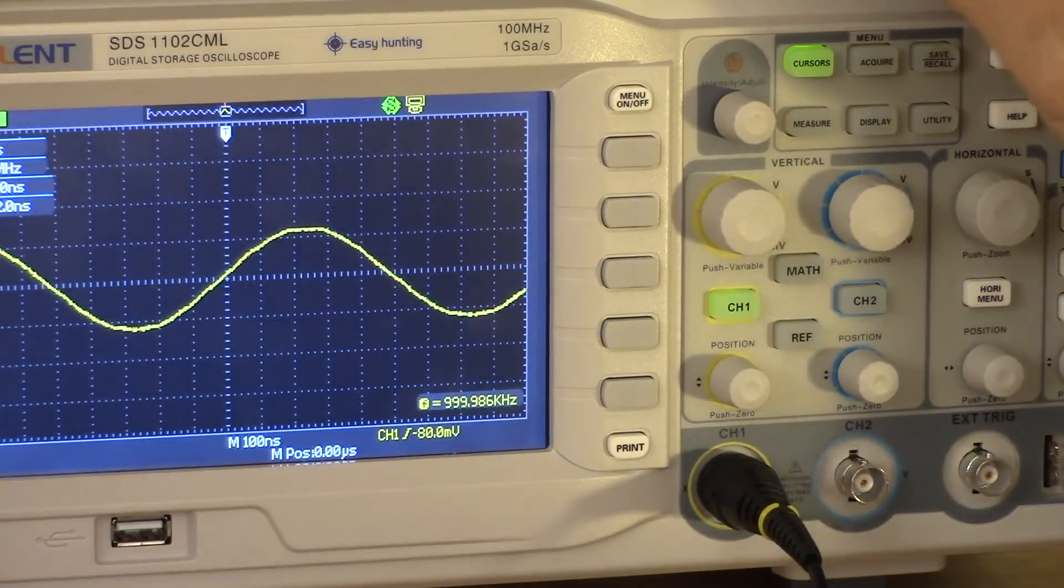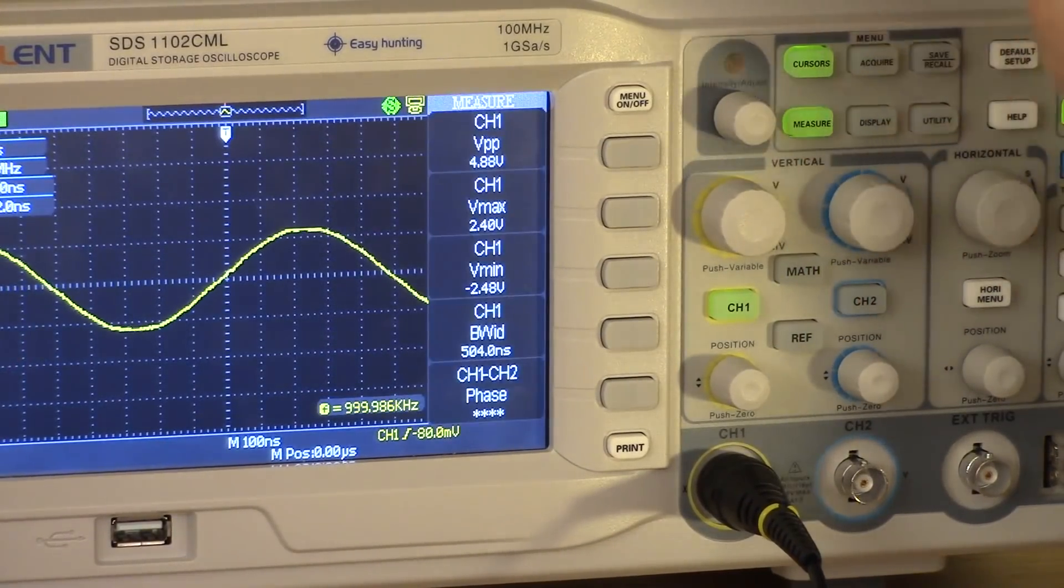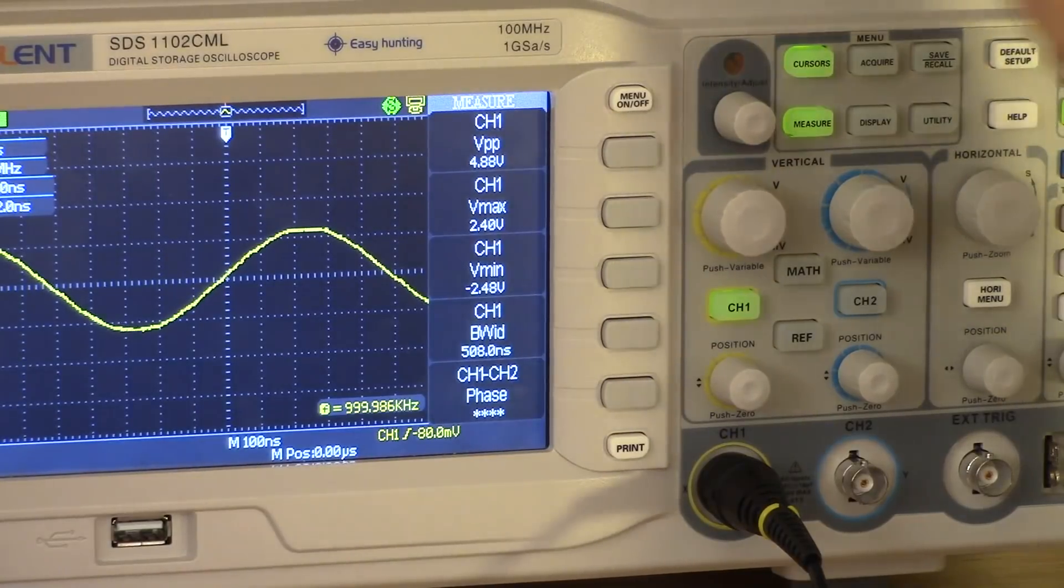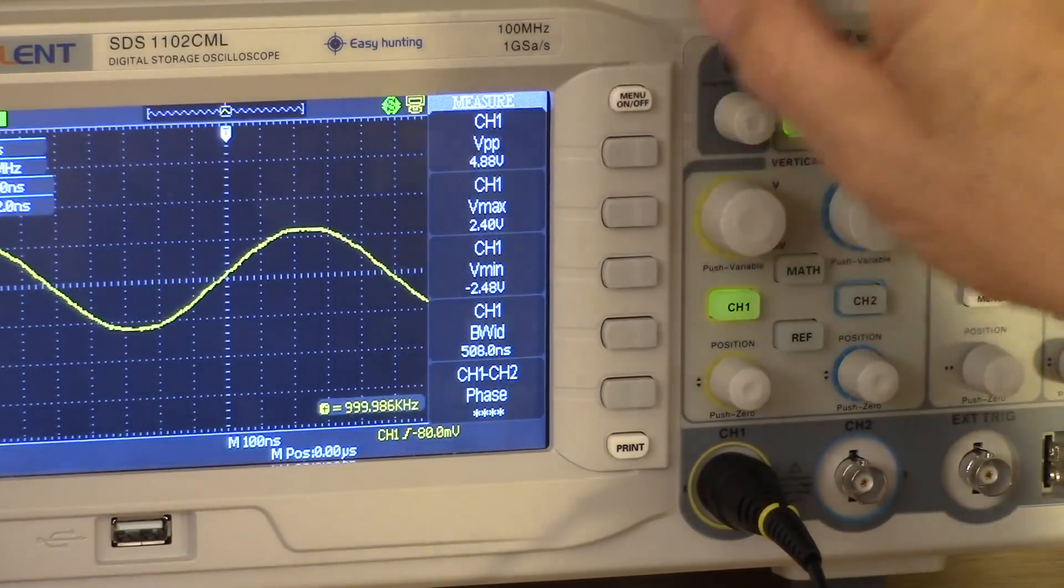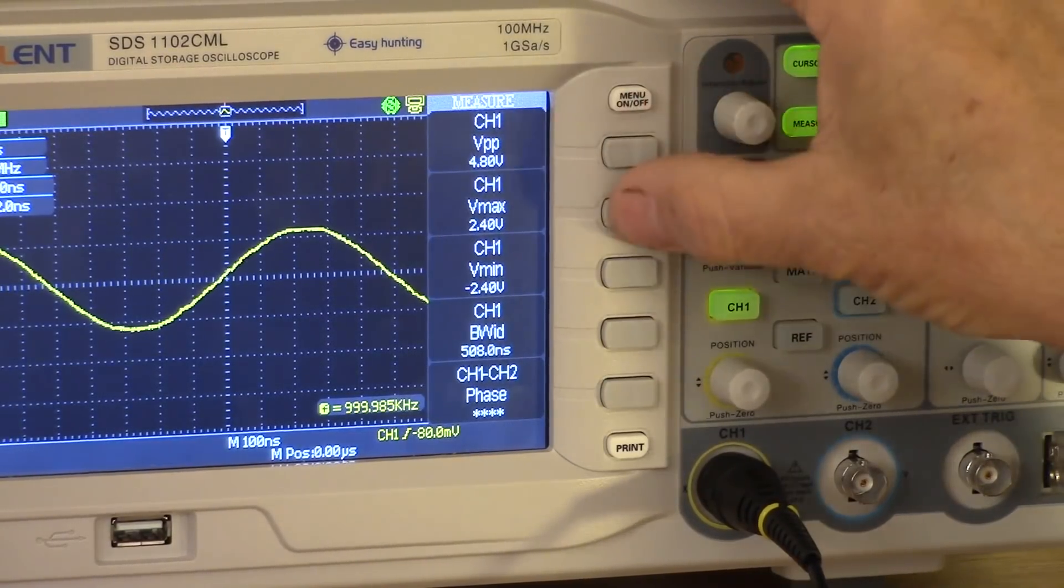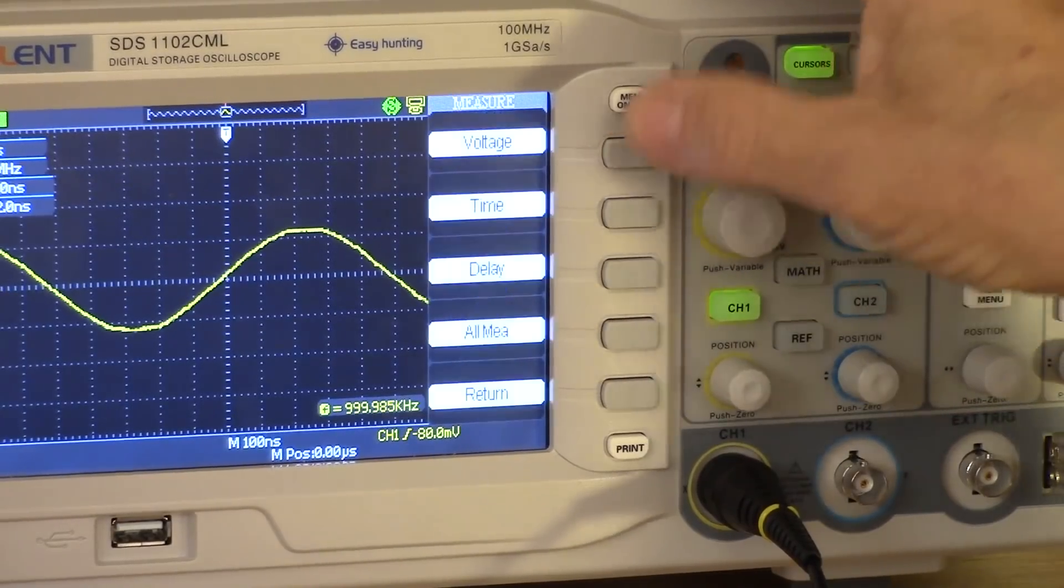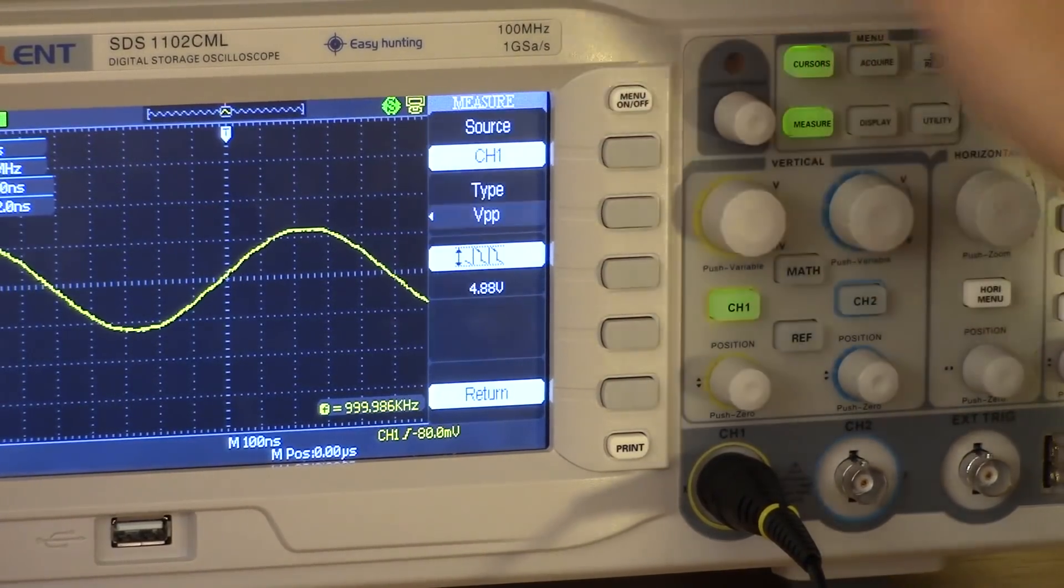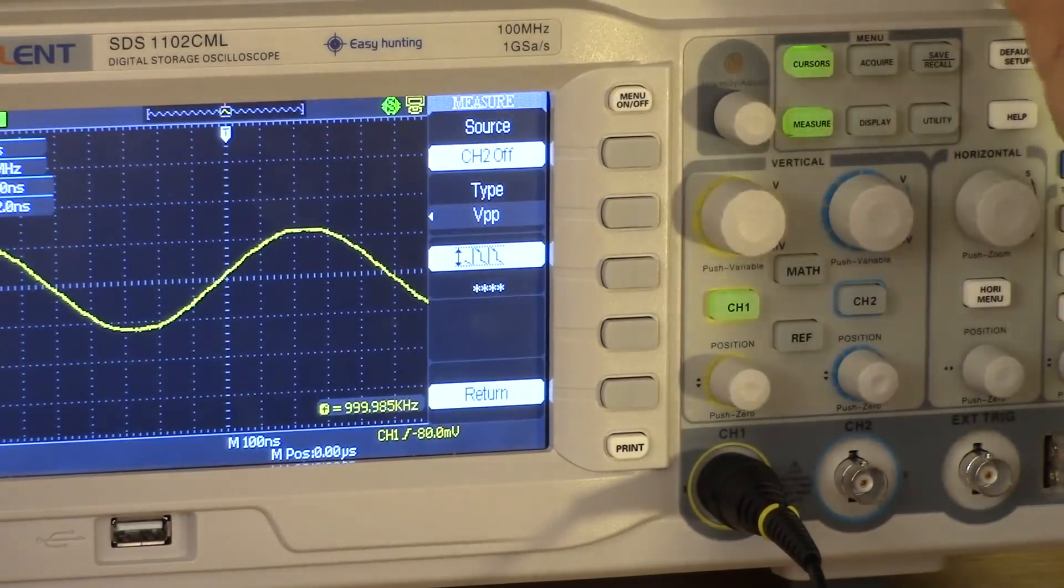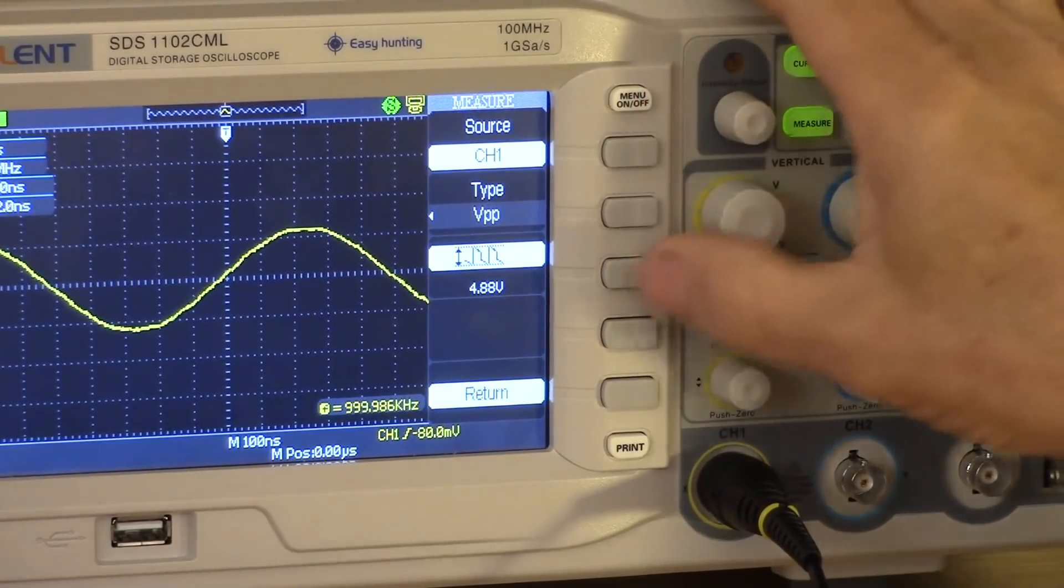The scope does allow us to take all kinds of automatic measurements and it's really quite a deep variety of measurements that it will do. Here's an example. I can set each of these buttons to be a different measurement. So here, for example, I can decide if I want to measure voltage on any of the sources, any of the channels. I'm using Channel 1.